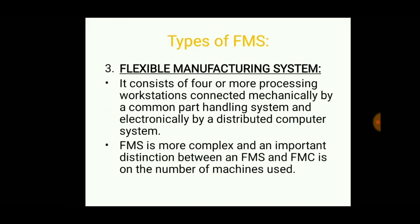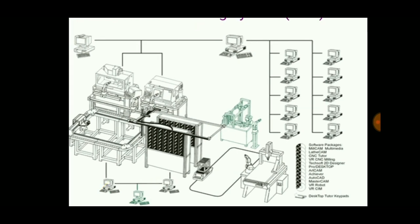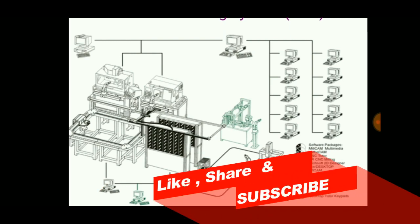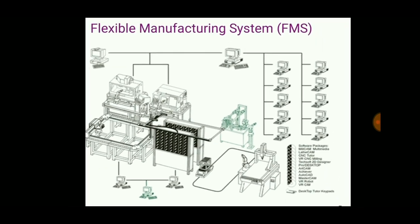The third type is the Flexible Manufacturing System. It consists of four or more processing workstations connected mechanically by a common part handling system and electronically by a distributed computer system. It is more complex. A series of subcomputers and a central computer can be attached to this system. A person can perform various multiple complex operations because an n number of CNC machines are involved, and an automated part handling and storage system is also present.